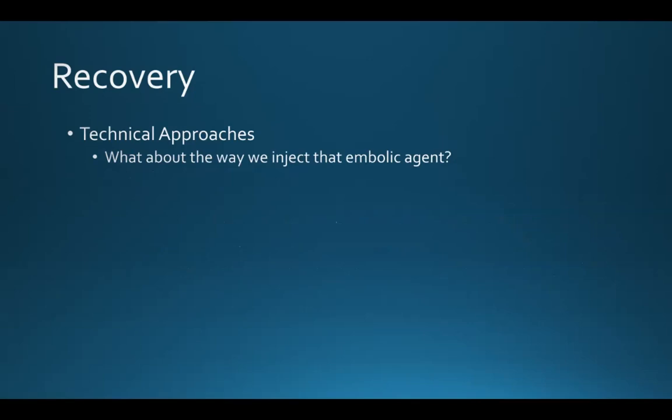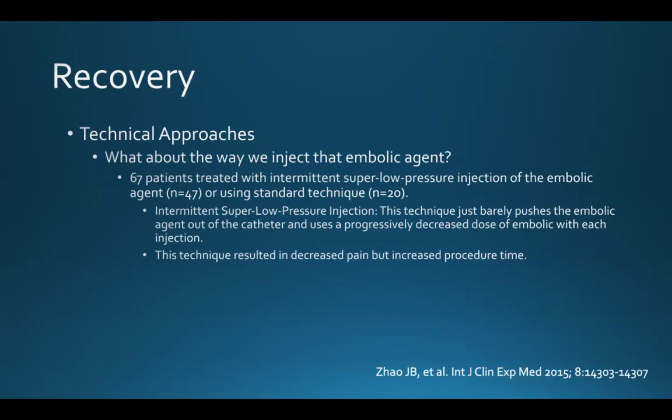Regarding the way we inject the embolic agent, it was shown in 2015 that an intermittent, super-low-pressure injection — where the embolic agent is just barely pushed out of the catheter and a progressively decreased dose of embolic is administered with each injection — is associated with decreased pain. Of course, this was also associated with increased procedure time compared to standard technique.